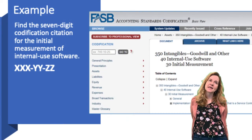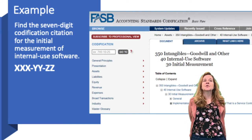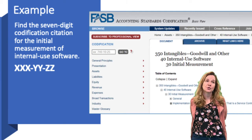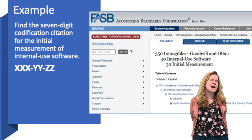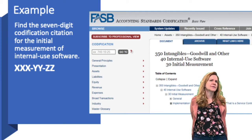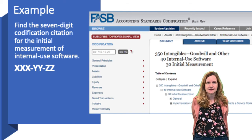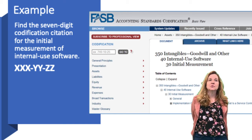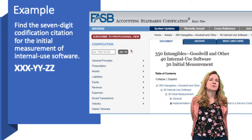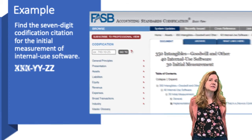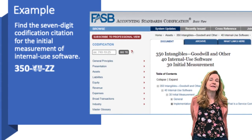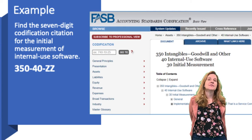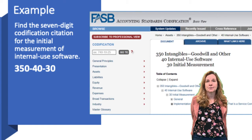Now let's look at a couple of examples. If you were looking for the seven-digit codification citation for the initial measurement of internal use software, you would need to know that internal use software falls under assets, and specifically that it is an intangible asset. So you would go to Assets, the topic would be 350 Intangibles, subtopic 40 — internal use software is a narrowly defined subtopic — and then section 30 for initial measurement.